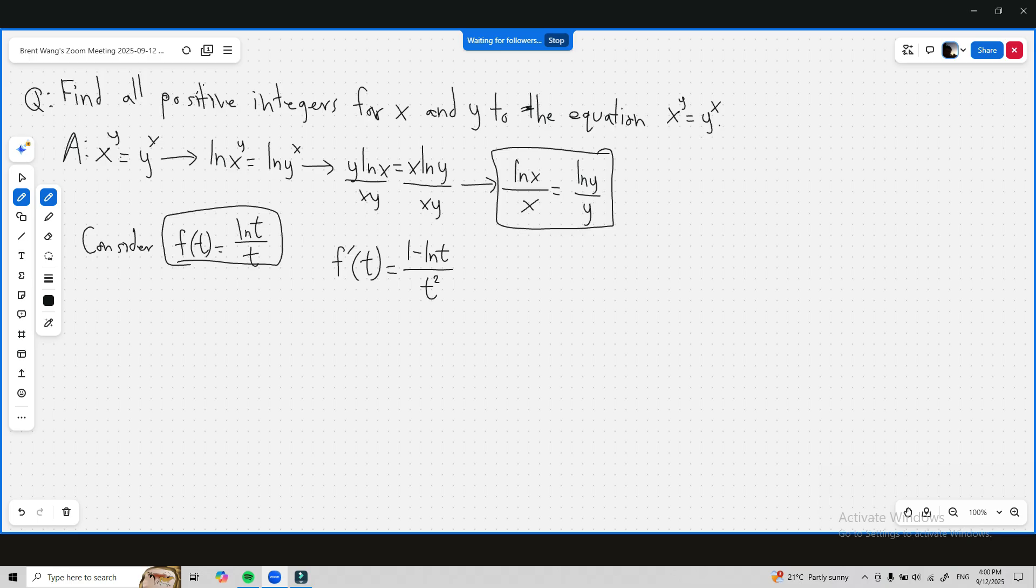And f prime of t, when one minus ln t is zero, if the first derivative is zero, then t equals e.